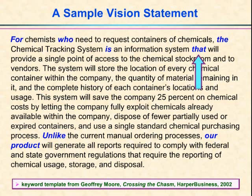We anticipated the Chemical Tracking System would save us about 25 percent per year on various costs because we could take full advantage of chemicals that were already around but maybe not being fully utilized. For example, maybe I need some sodium chloride and the Chemical Tracking System says, hey, Amanda has some sodium chloride. Maybe I can just go down the hall and borrow a few grams from Amanda. That way I don't have to buy a new bottle of sodium chloride and the company saves money.